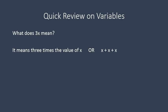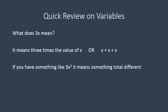Quick review on variables. Just to get our heads kind of wrapped around why it's important or what a like term is a little bit different. 3x means 3 times the value of x or x plus x plus x. If x was equal to 2 for example it would be 3 times 2 which is 6 or 2 plus 2 plus 2 which is also 6. So it means 3 times your value of x.